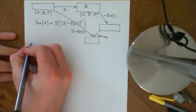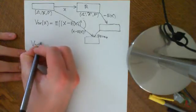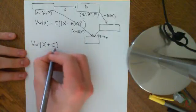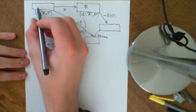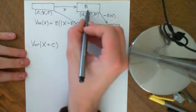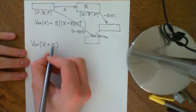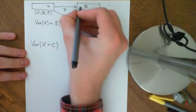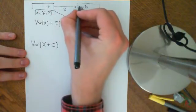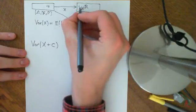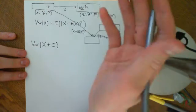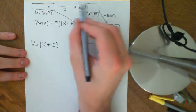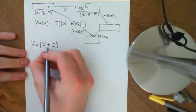Now let's do some basic properties of variance. Let's calculate the variance of a random variable X plus a constant c. We have our random variable mapping every outcome in the abstract probability space onto a real number. We define a new random variable X plus c, which takes every outcome mapped to X(s) and adds c, so it goes to X(s) + c. That is a new random variable which inherits the probability structure.